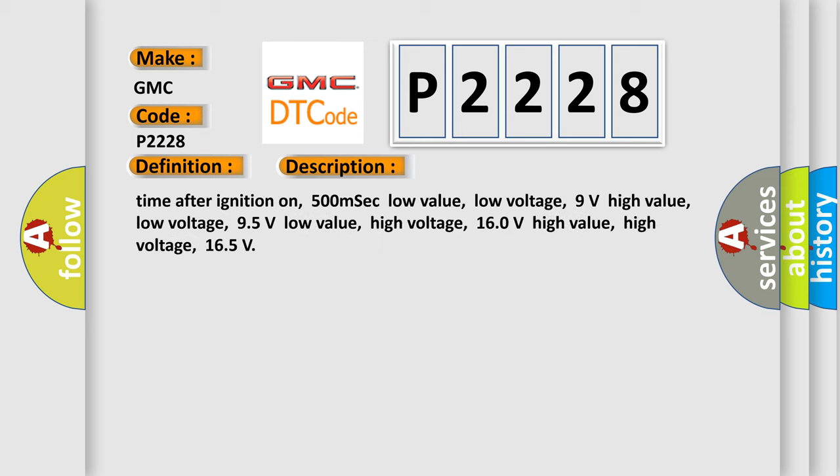Time after ignition on: 500 milliseconds. Low value low voltage: 9 volts. High value low voltage: 95 volts. Low value high voltage: 160 volts. High value high voltage: 165 volts.